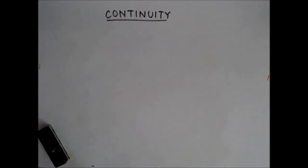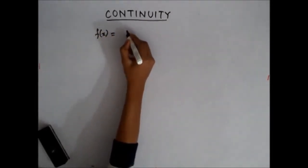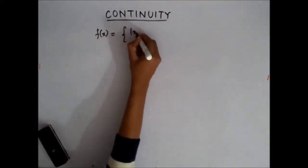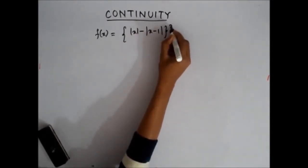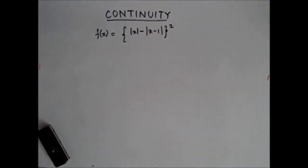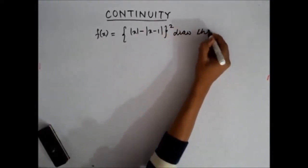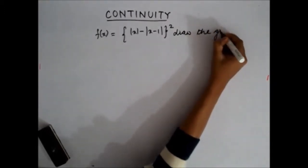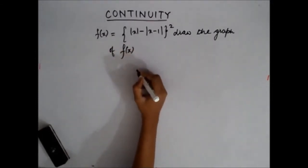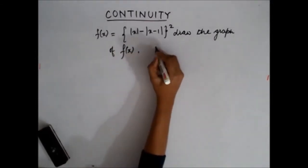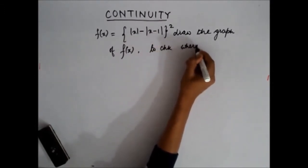The next question: the function f(x) is given by mod of x minus mod of x minus 1, whole square. You have been asked to draw the graph of f(x) and also to check whether the function has any discontinuity.